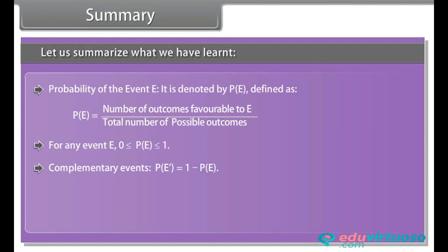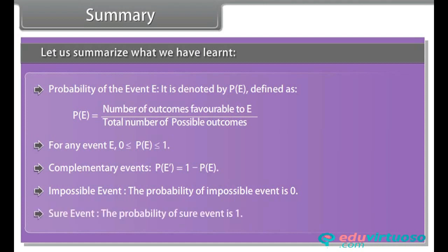Complementary events: Probability of event not E is equal to 1 minus probability of event E. Impossible event: The probability of an impossible event is 0. Sure event: The probability of a sure event is 1.